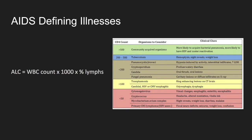With a CD4 count of greater than 500, we're not as concerned about an AIDS defining illness. When the CD4 count is less than 200, it should definitely be on our differential. But we don't always have a CD4 count in the ED. The quick and easy way is the absolute lymphocyte count — white count times 1,000 times the percent of lymphocytes. If this number is less than 1,000, the CD4 count is likely less than 200. Over 2,000, we'd be less concerned.